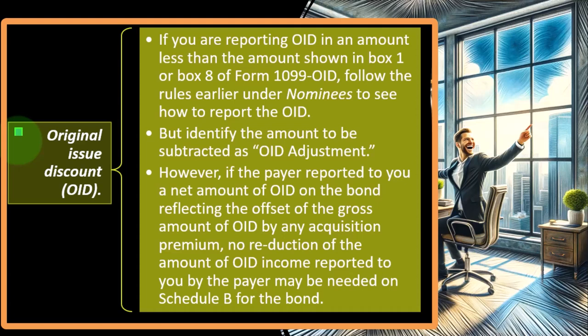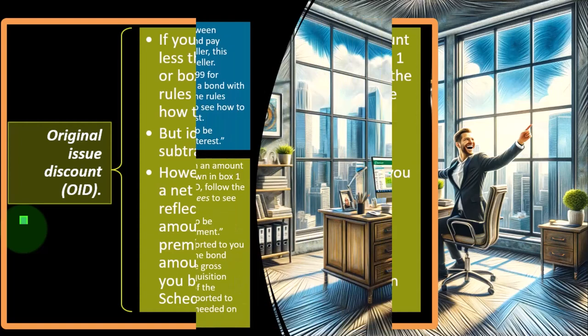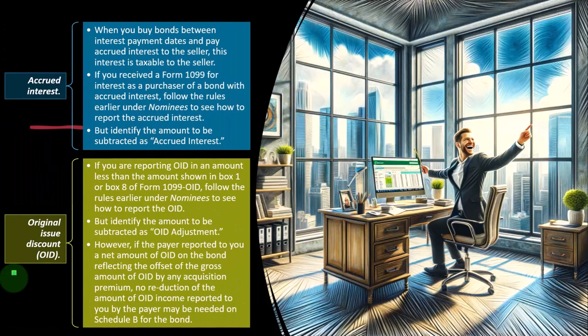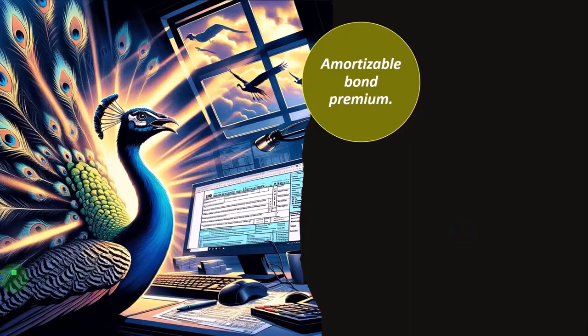However, if the payer reported to you a net amount of OID on the bond reflecting the offset of the gross amount of OID by any acquisition premium, no reduction of the amount of OID income reported to you by the payer may be needed on Schedule B for the bond.